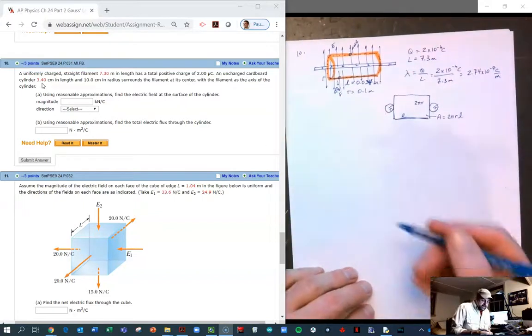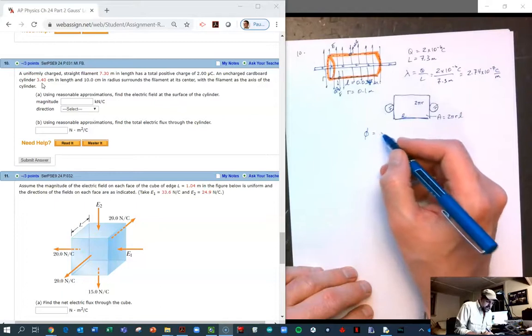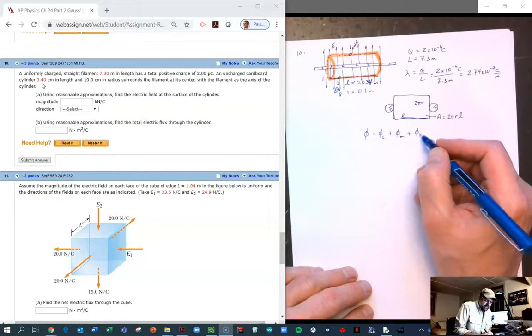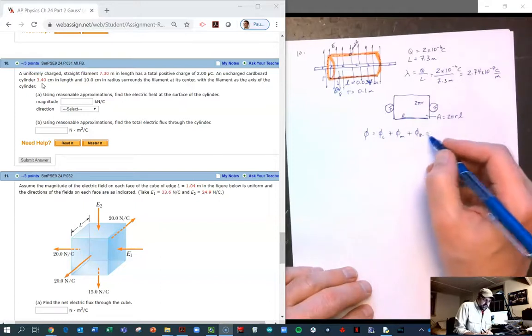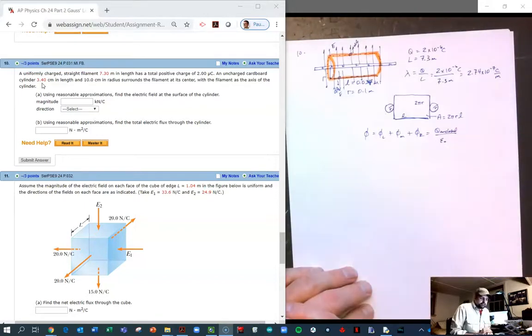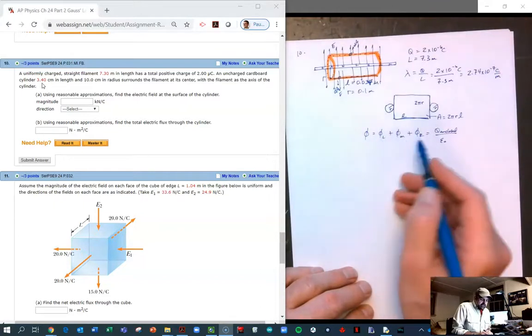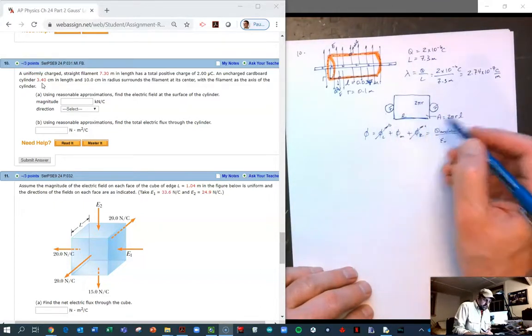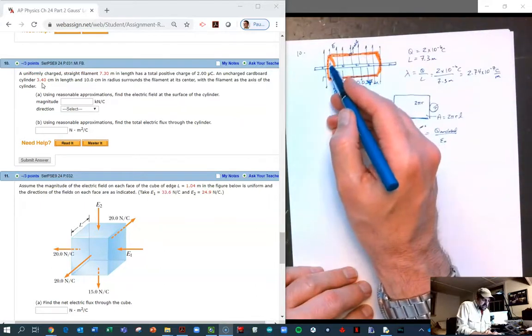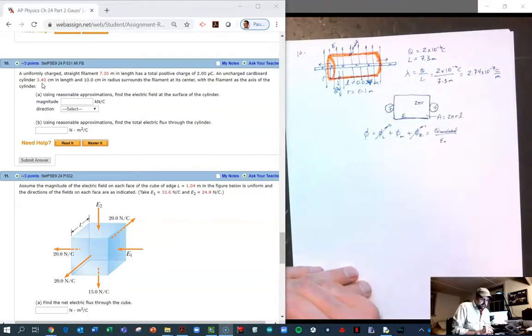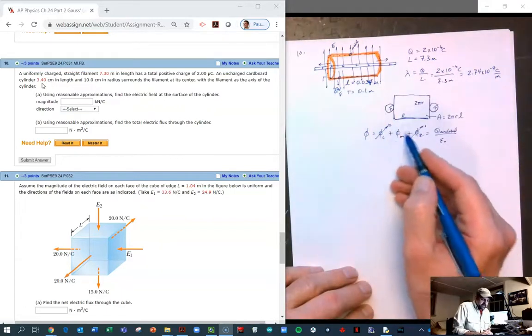What is the flux? The total flux is the flux through the left plus the flux through the middle surface plus the flux through the right surface, and we know that's equal to Q enclosed over epsilon naught. The flux at the left and the flux at the right are both zero because the area is pointing perpendicular to the electric field on both surfaces.